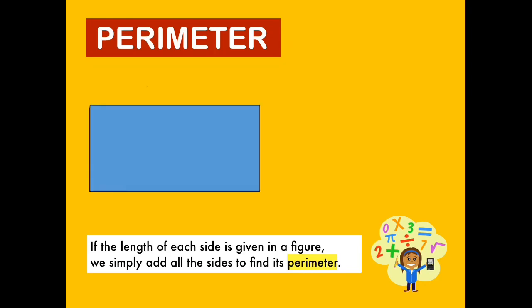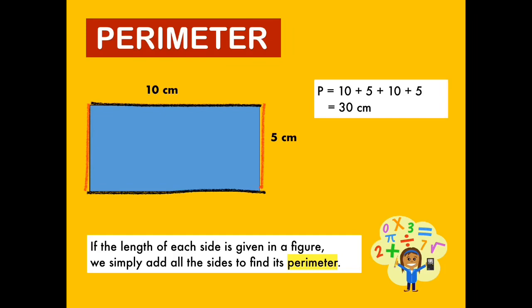In this example, the length and the breadth of the rectangle is given. The rectangle has one pair of length and one pair of breadth. The length of the rectangle is 10 centimeters and the breadth is 5 centimeters. The perimeter of a figure is the total length around it. So let's add 10 plus 5 plus 10 plus 5 equals 30 centimeters. The perimeter of the figure is 30 centimeters.